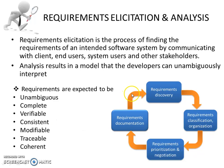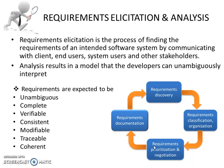Let's look at the requirements elicitation and analysis process. The first step is requirements discovery, in which you find out all the requirements from users. Then requirements classification and organization, where the requirements are classified according to the category they belong to. Then requirements prioritization and negotiation, where the requirements are given importance and implemented accordingly. And then requirements documentation, so that you can use it in the future for reference.